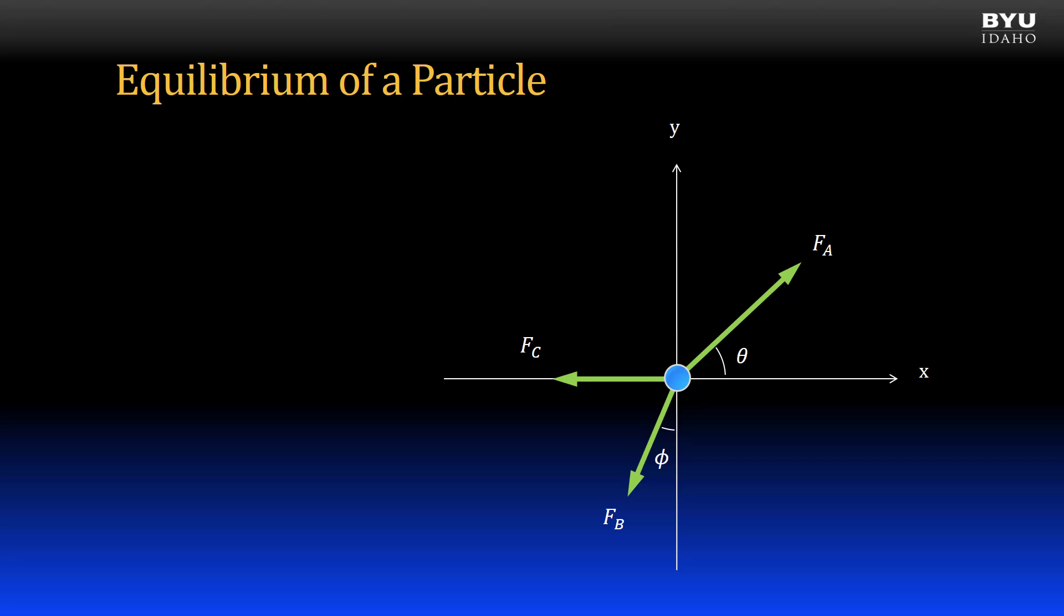Because all the forces are acting in the plane of the screen, we only need two equations. One that sums all the force components in the x direction to zero, and one that sums all the force components in the y direction to zero. Let's start with the x direction. The typical convention is to say that any force component acting to the right is positive, and any force component acting to the left is negative. I will use this notation to show that. Here is the equilibrium equation for the x direction. The first term is for the x component of force FA. The next term is for the x component of force FB. Note the negative sign because the component is pointing to the left. The third term is for force FC. The full force is acting in the negative x direction. All three of these components will sum to zero when the particle is in static equilibrium.